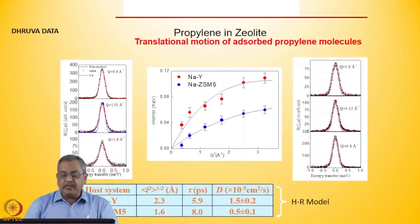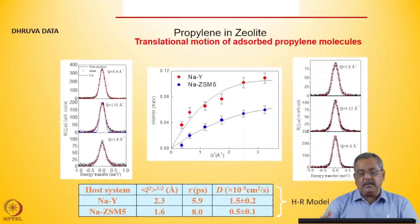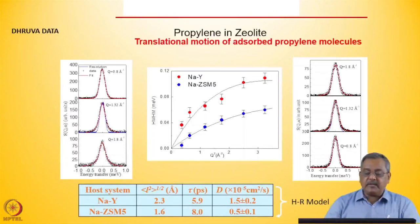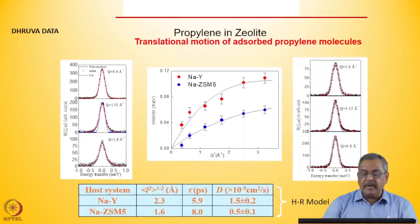We followed with quasi-elastic neutron scattering, discussed in the last two lectures, for understanding diffusion in materials. I used examples of organic molecules in zeolite cages for Dhruva experiments, and showed how slow dynamics can be measured using the spin-echo spectrometer. This is a quick summary of all the topics covered in neutron scattering during these lectures.